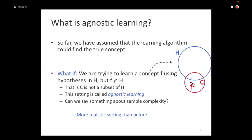In agnostic learning, we drop the assumption that the true function lies in the hypothesis space. The learning algorithm is agnostic to the choice of the hypothesis. If we're trying to learn a concept C using a hypothesis space H, we have no reason to believe that the true function F is contained inside H. The question is: given that we drop this assumption, what can we say about sample complexity — how many examples do we need to have the epsilon-delta guarantee?